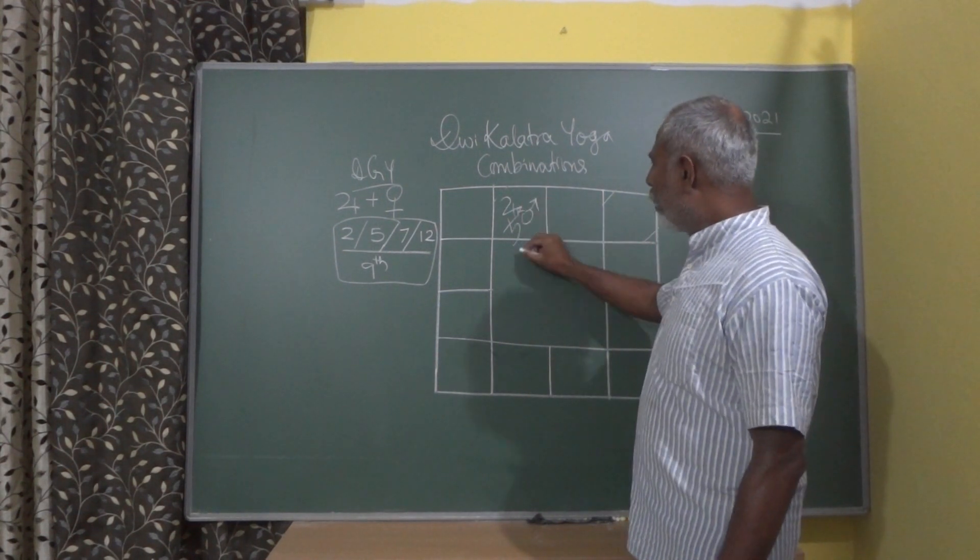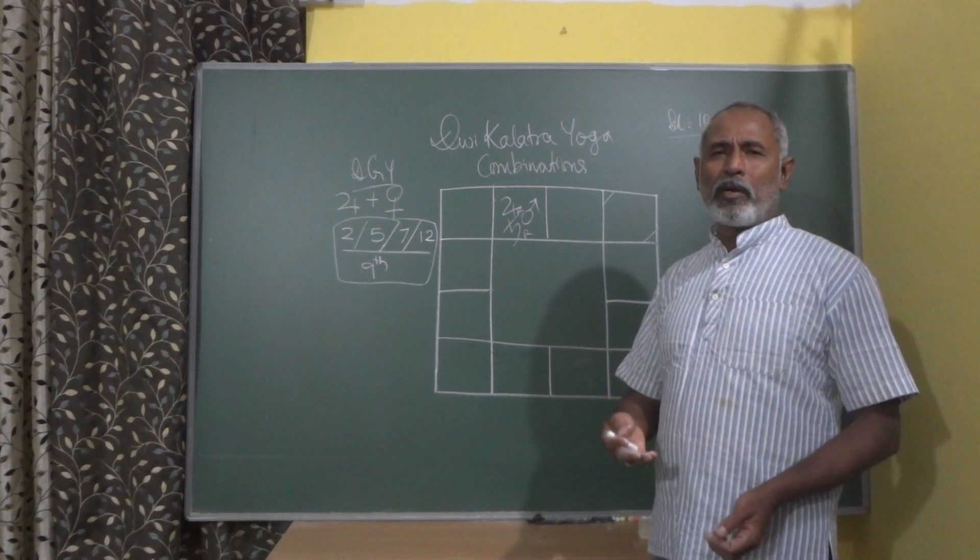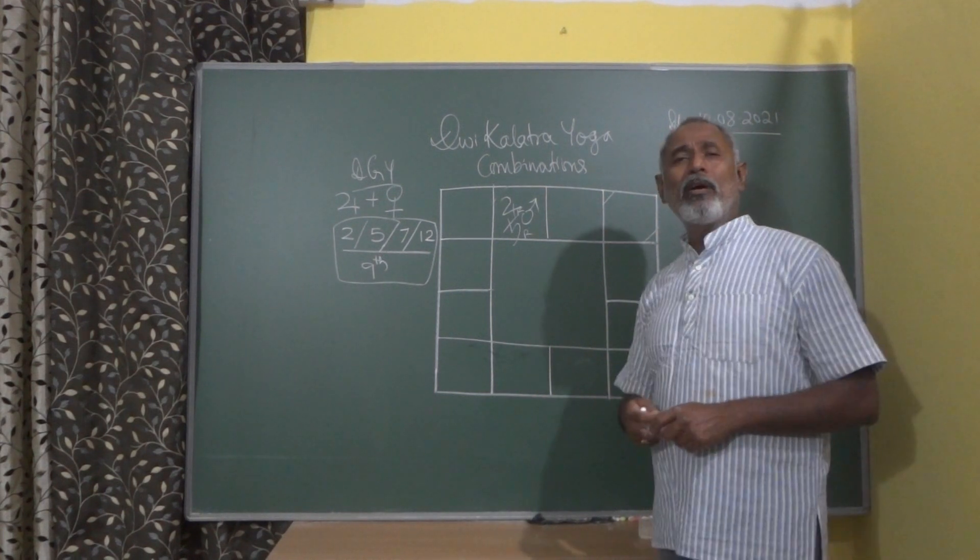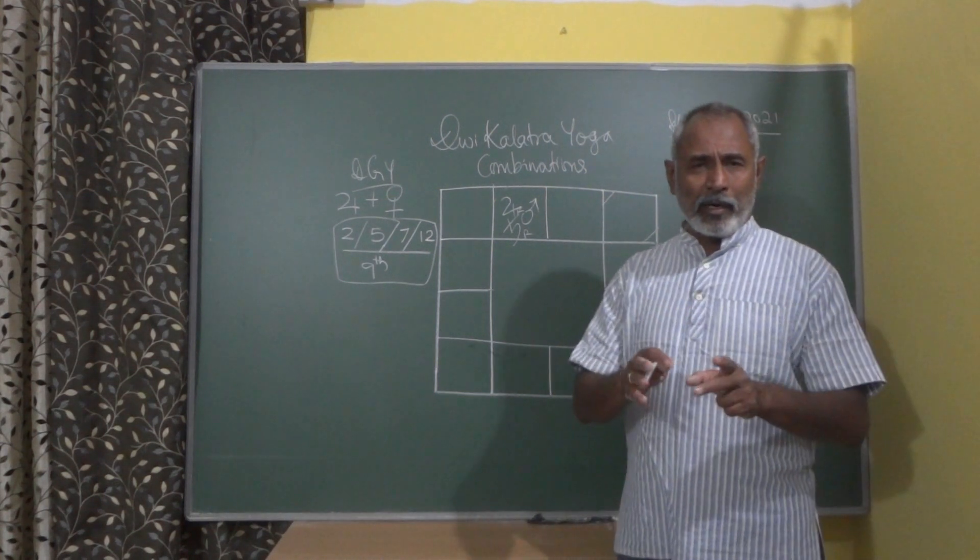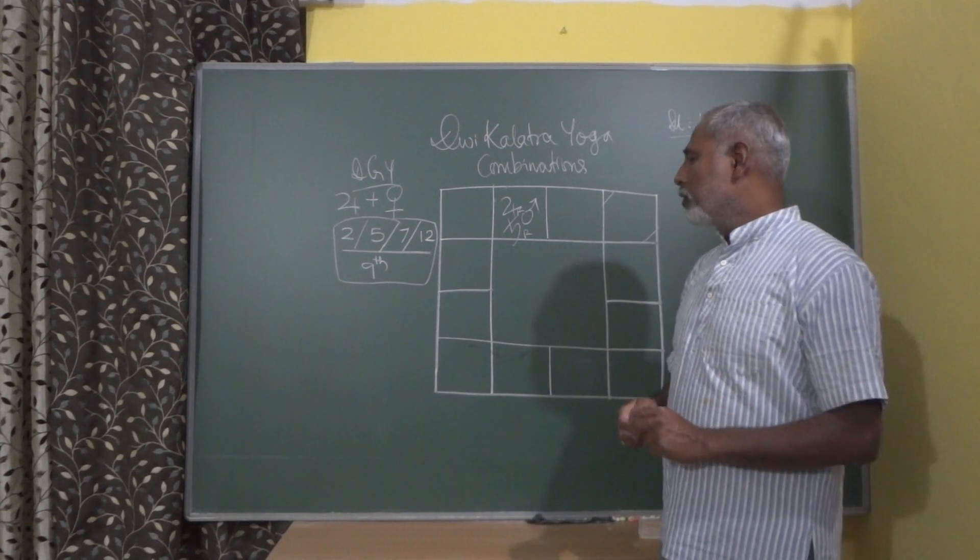if either of Jupiter or Saturn is retrograde. I am not telling both have to be retrograde. I have seen in many cases that when the 7th lord and the 9th lord both are retrograde, the person will peacefully be in one marriage. I have seen that in many cases.